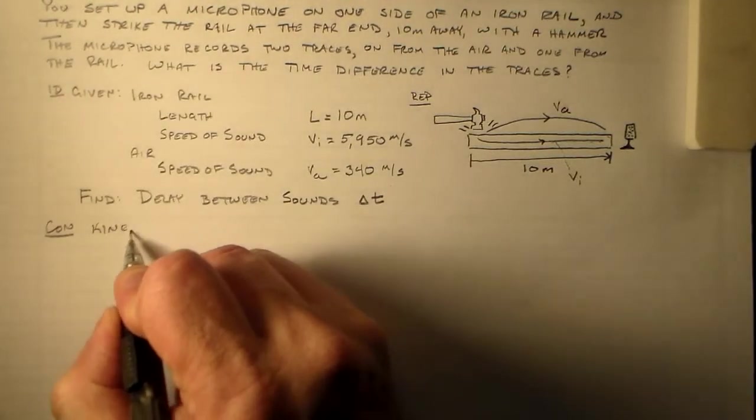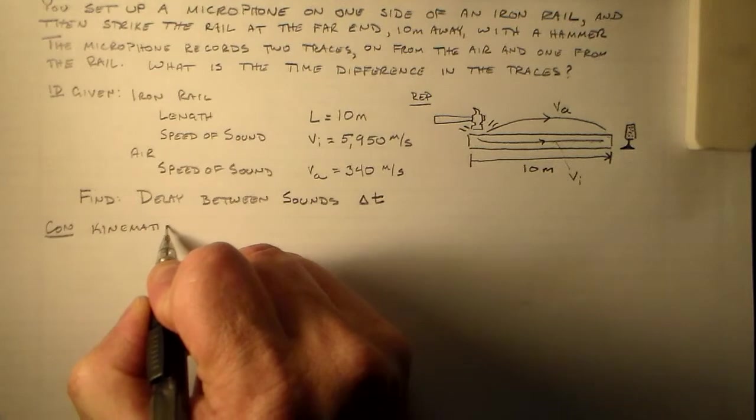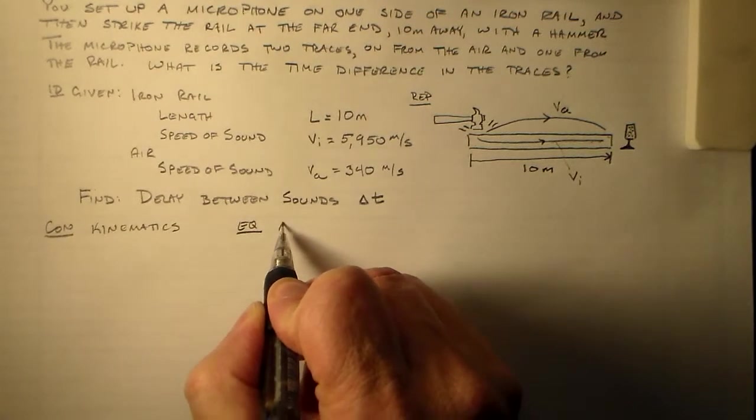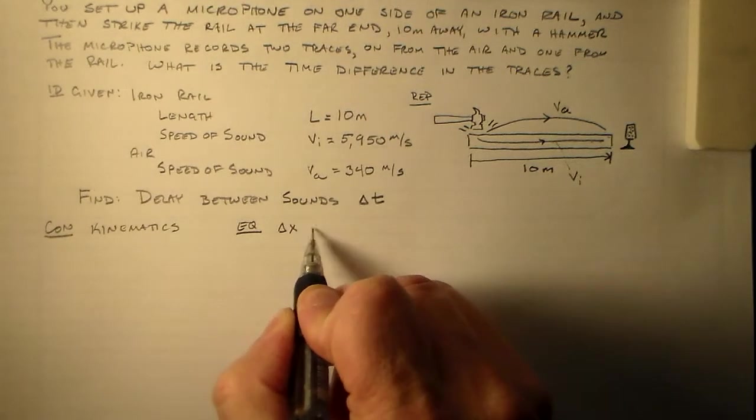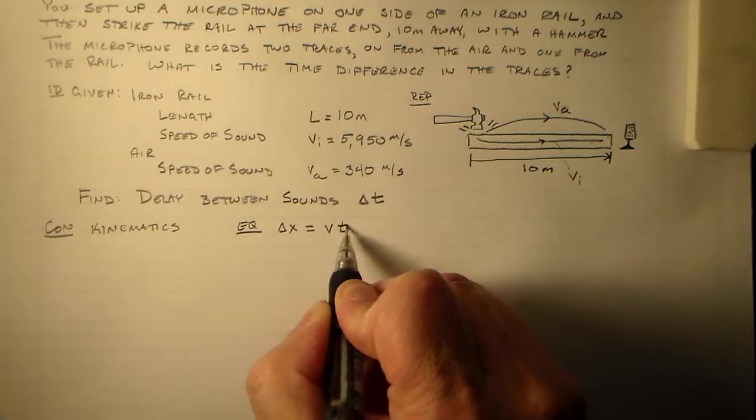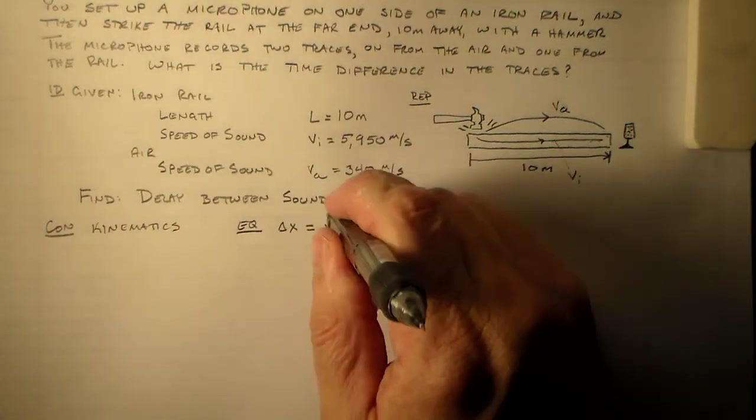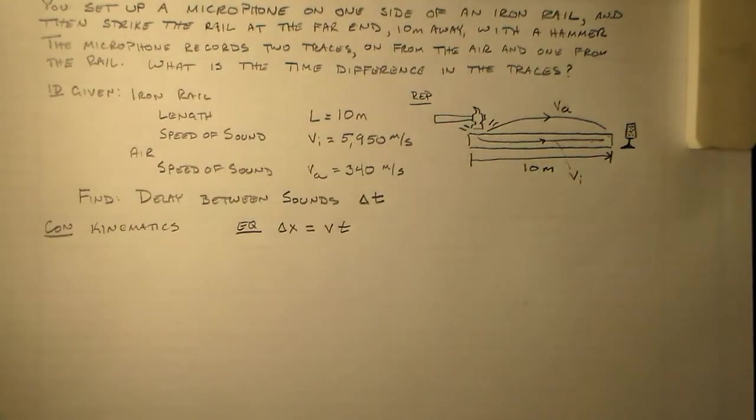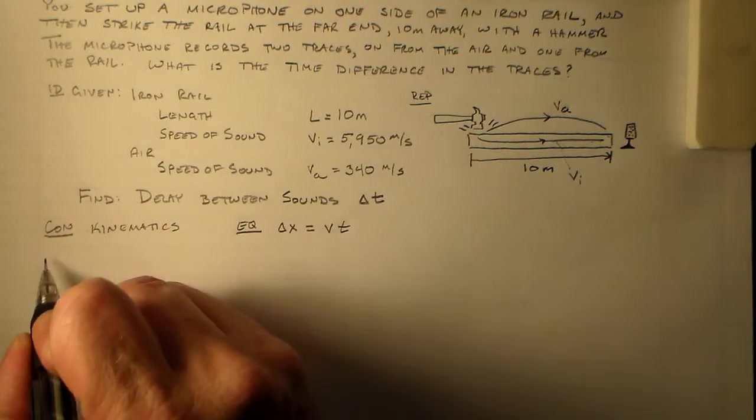So even though this is in the speed of sound chapter or section, I'd probably just call this kinematics. And I'd use the whole delta x equals vt, or maybe v delta t. No, we want to use vt because we were using delta t for something else. So that's all you really need to say for the concept and the equation. It's something simple like that. You don't have to get complicated. You don't have to be profound. It's just something simple.